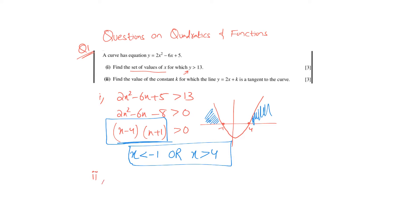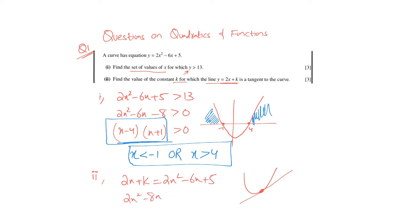In part 2, they are saying: find the value of constant k for which the line y equals 2x plus k is a tangent to the curve. Since the line and curve are tangent to each other, you equate the two y values and simplify, getting 2x² minus 8x plus 5 minus k equals 0 as your general equation.